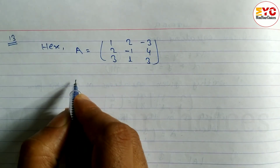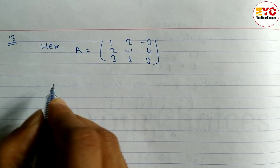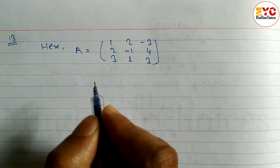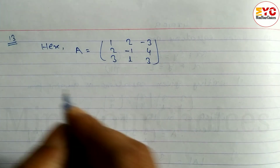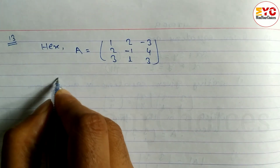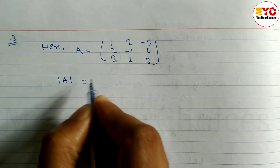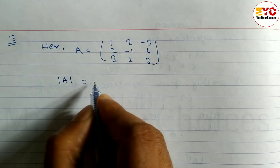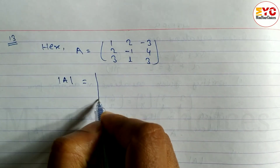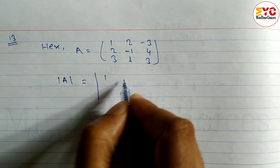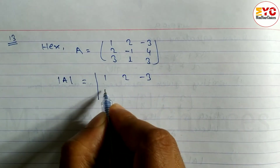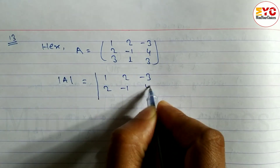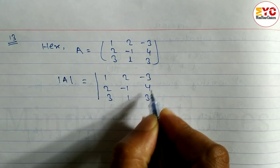First of all, we have to find out whether A inverse exists or not. So first of all, we have to find the determinant of A. For this 3×3 matrix, find the determinant: 1, 2, minus 3; minus 1, 4; 3, 1, 3.